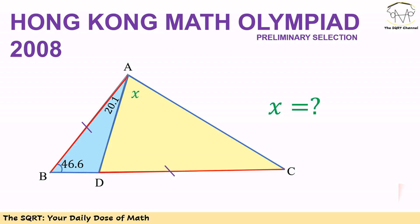Hello everyone. In this video we are going to talk about a geometry problem from the Hong Kong Math Olympiad. In this problem we have triangle ABC and we know angle B is equal to 46.6°. On BC we select a point D such that DC will be equal to AB.